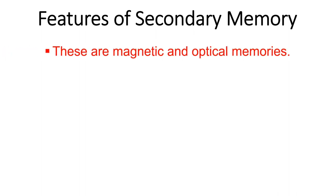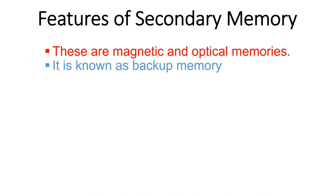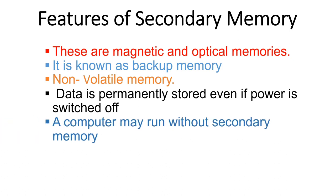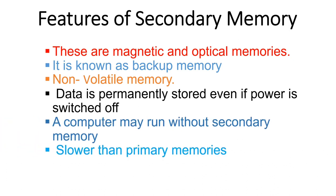The features of secondary memory include: they are magnetic and optical memories, also known as backup memory because they store data prominently. They are non-volatile, meaning data is not lost when the computer is turned off and data is permanently stored even if the power is switched off. A computer may run without secondary memory. They are slower and less expensive than primary memory.